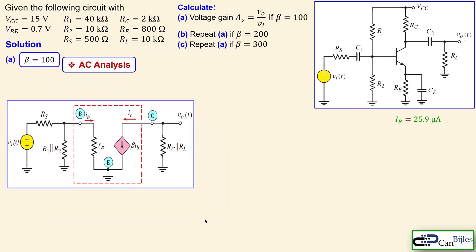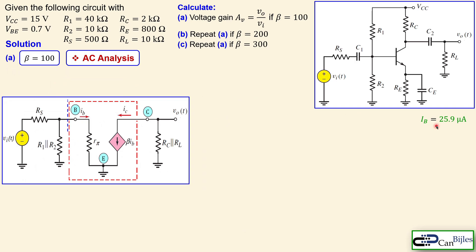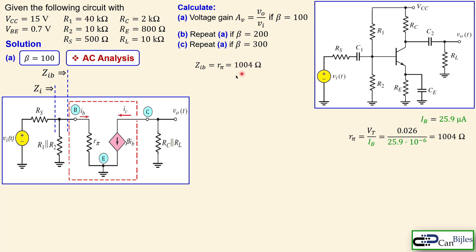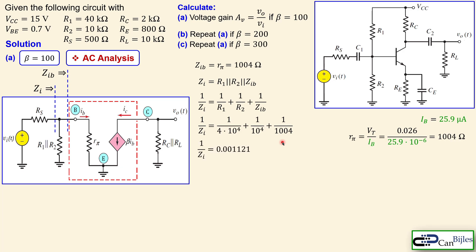Using the DC base current, ZIB is just Rpi. Rpi is given by the thermal voltage divided by the DC base current, giving 1004 ohms. ZI is the parallel combination of R1, R2, and Rpi — three resistors in parallel — giving ZI equal to 892 ohms, close to 900 ohms.